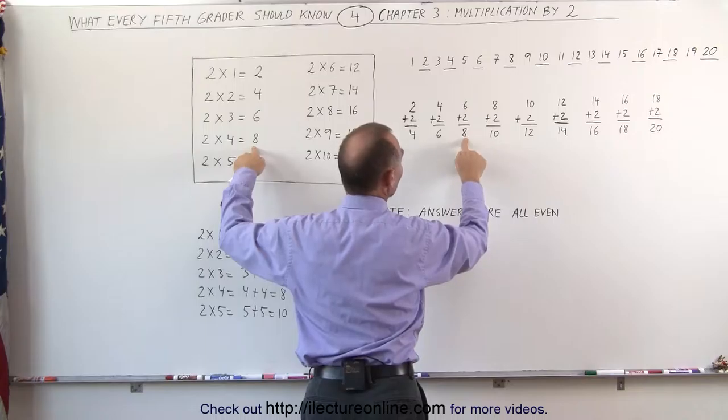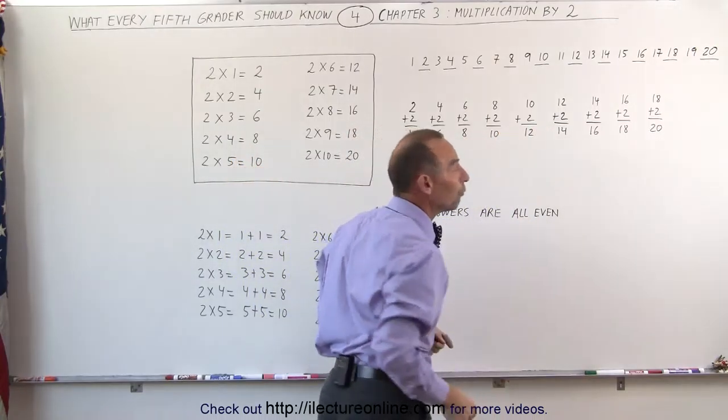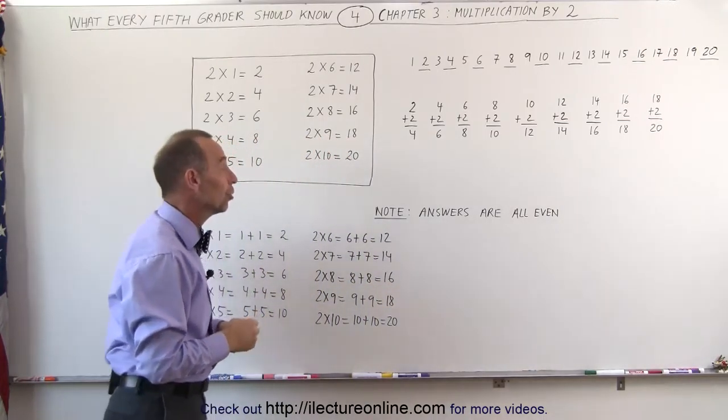So the previous answer of 2 times 3 is 6, the next one, 2 times 4, we simply add 2 to that, we get the next answer. We add 2 to that, we get the next answer, and so forth. So it's another way of looking at the multiplication times 2.